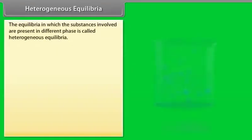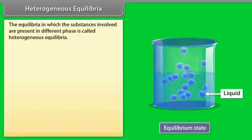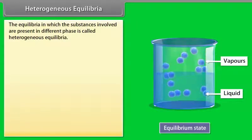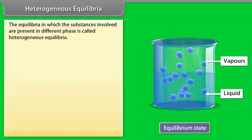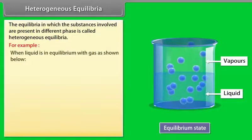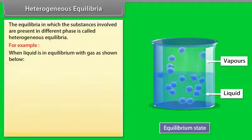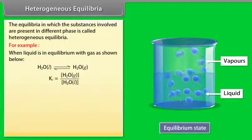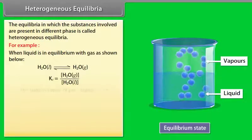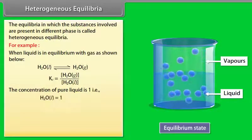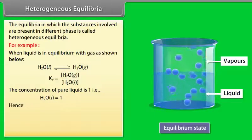Heterogeneous Equilibria: Equilibria in which the substances involved are present in different phases are called heterogeneous equilibria. For example, when a liquid is in equilibrium with a gas, the concentration of a pure liquid is taken as 1 (i.e., [H₂O(l)] = 1), and the equilibrium constant expression is simplified accordingly.